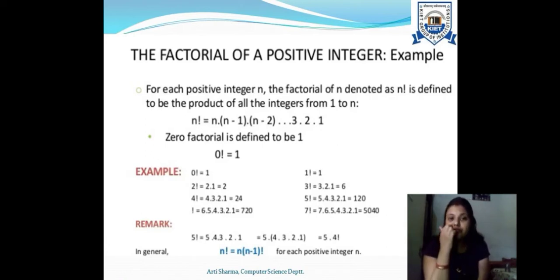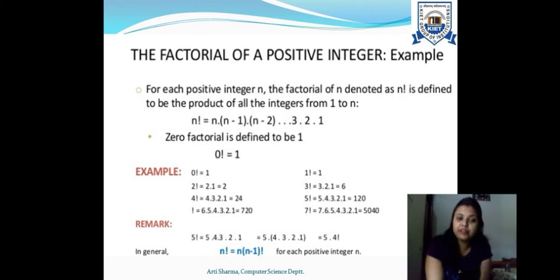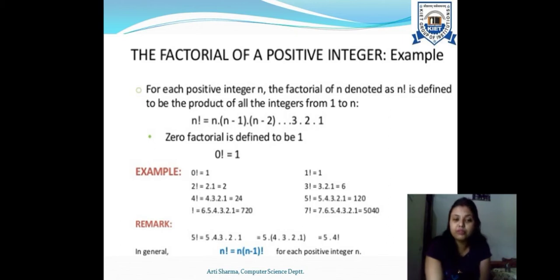A more popular example of recursively defined functions is the factorial of a positive integer. For example, finding the factorial of 3 requires multiplying 3 × 2 × 1, moving towards 1. The base condition is: if we have 0 or 1, the factorial is 1. So the base conditions are f(0)=1 and f(1)=1, and recursion does not apply for these — the function terminates at these points.